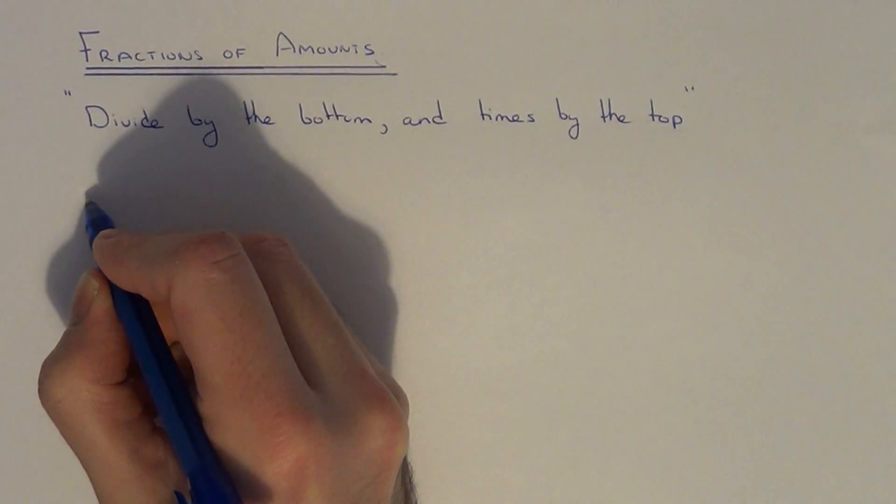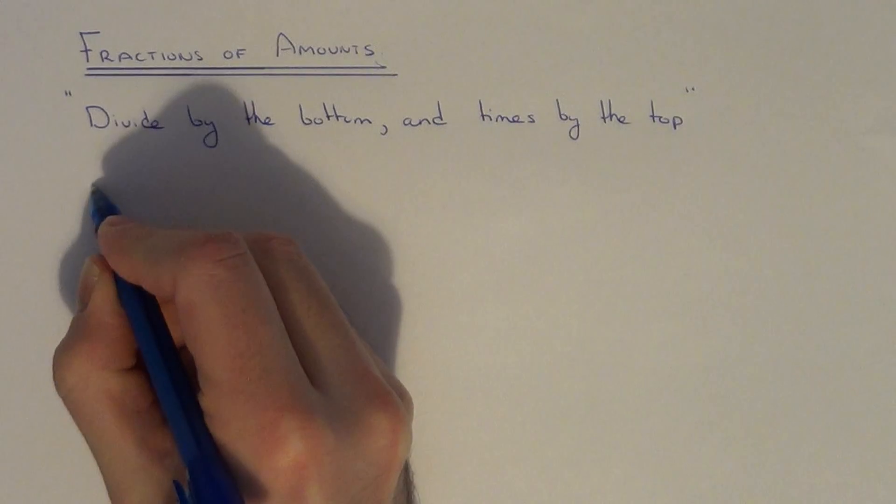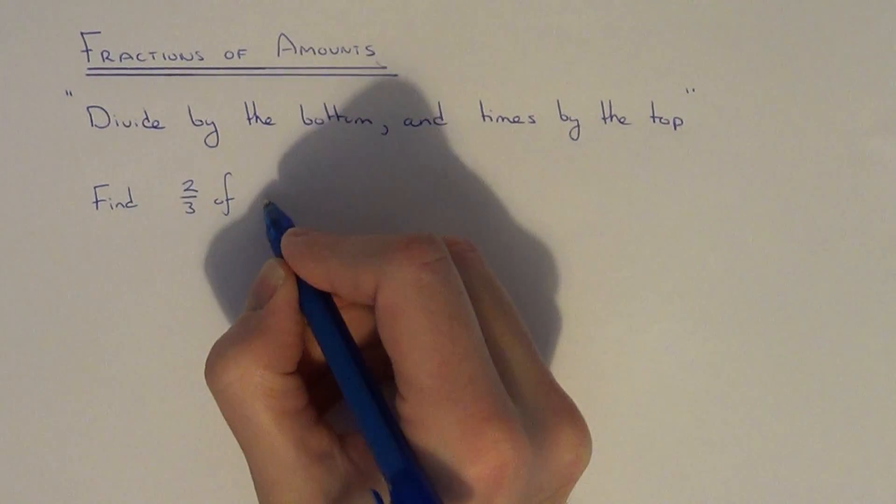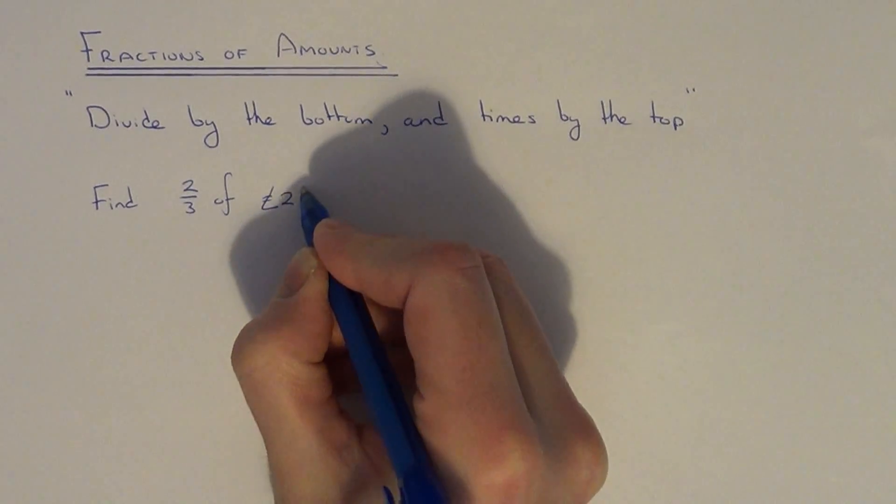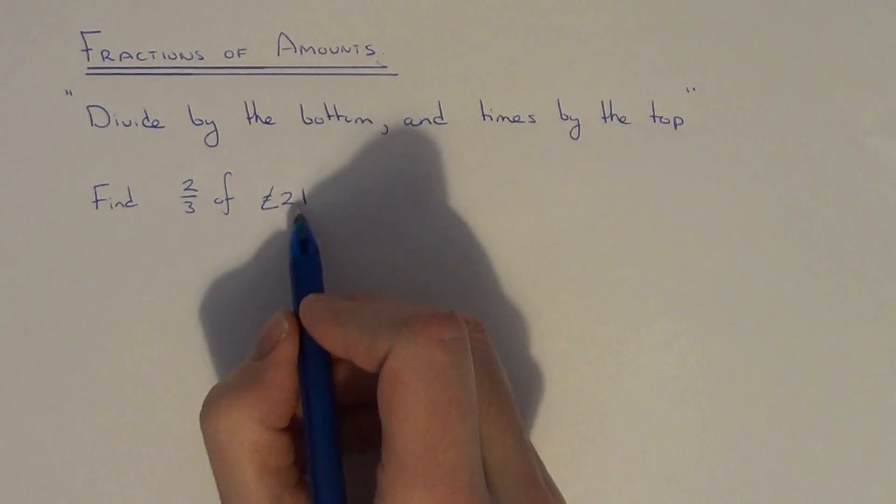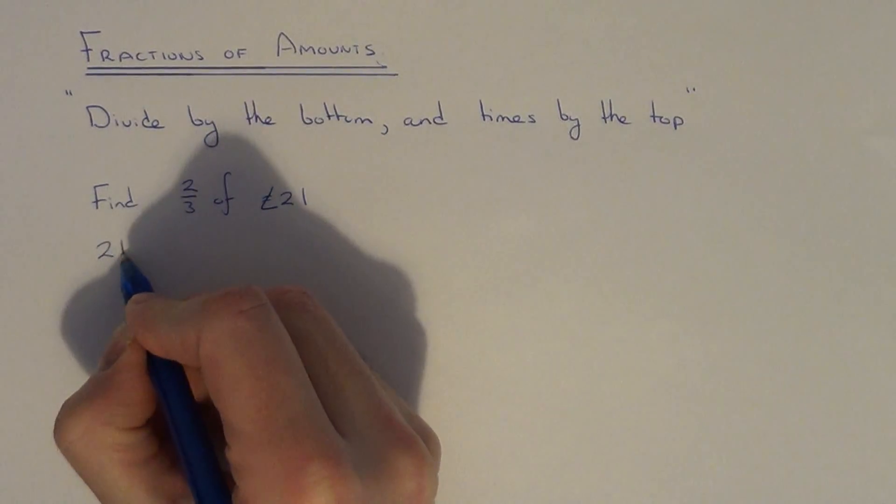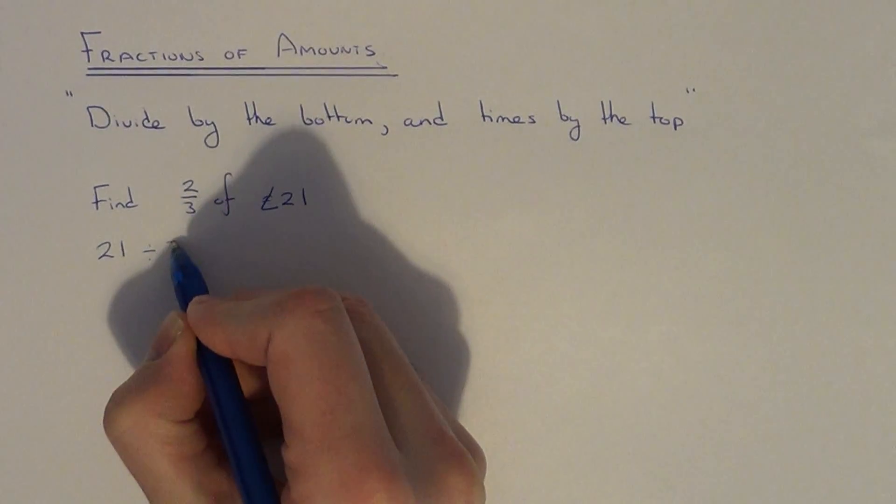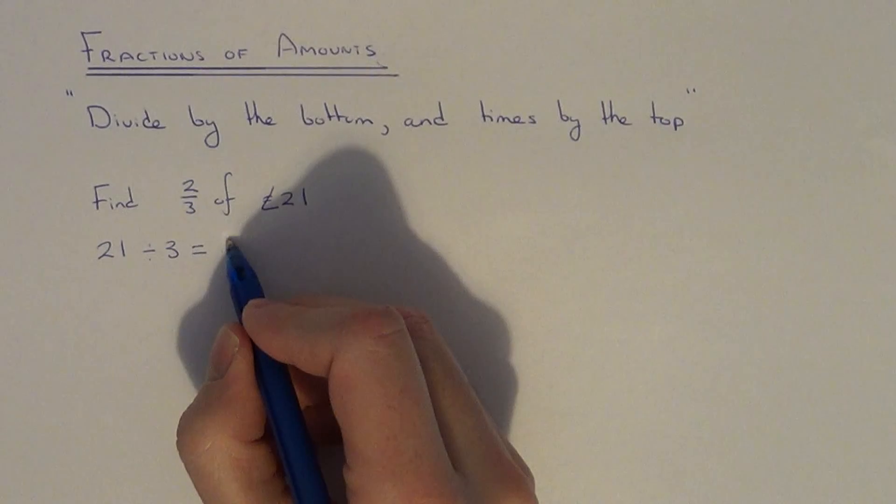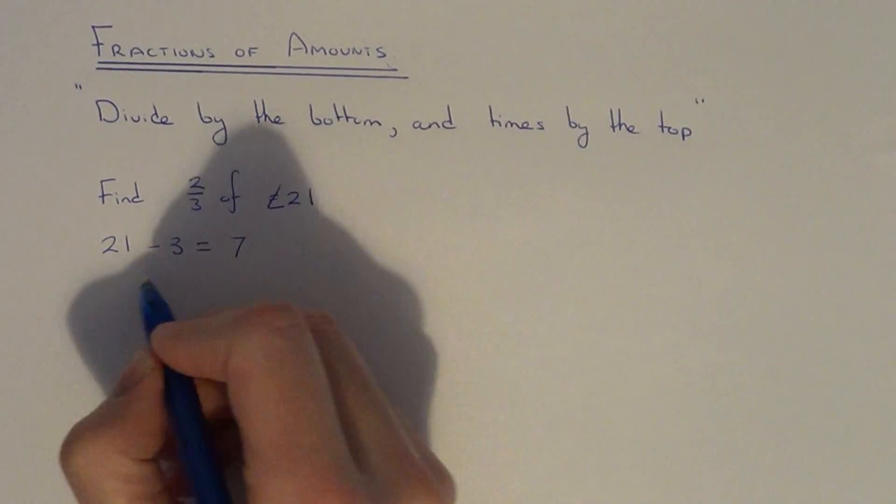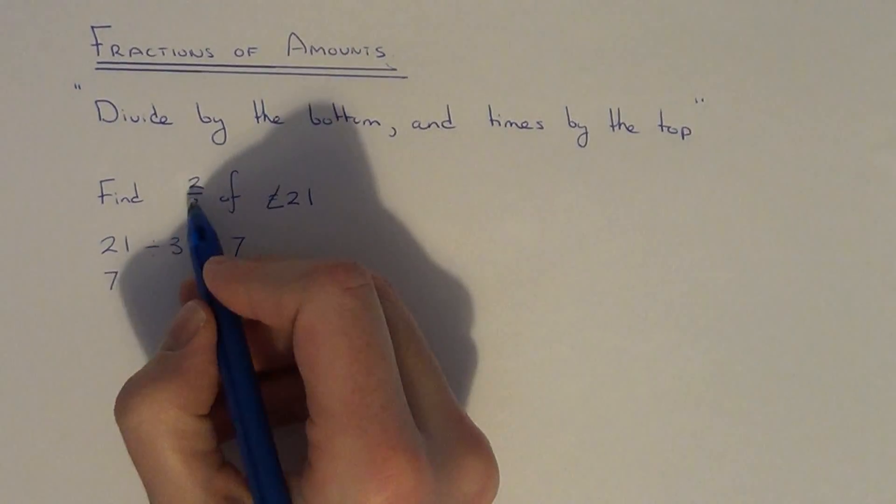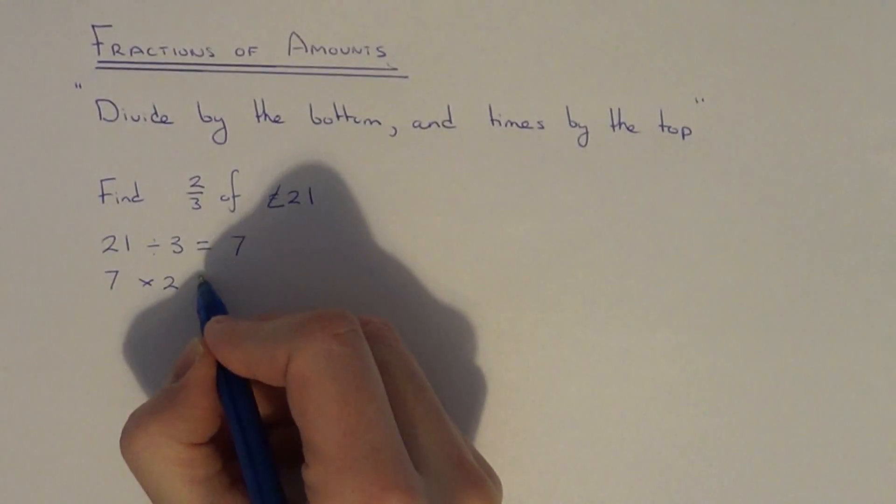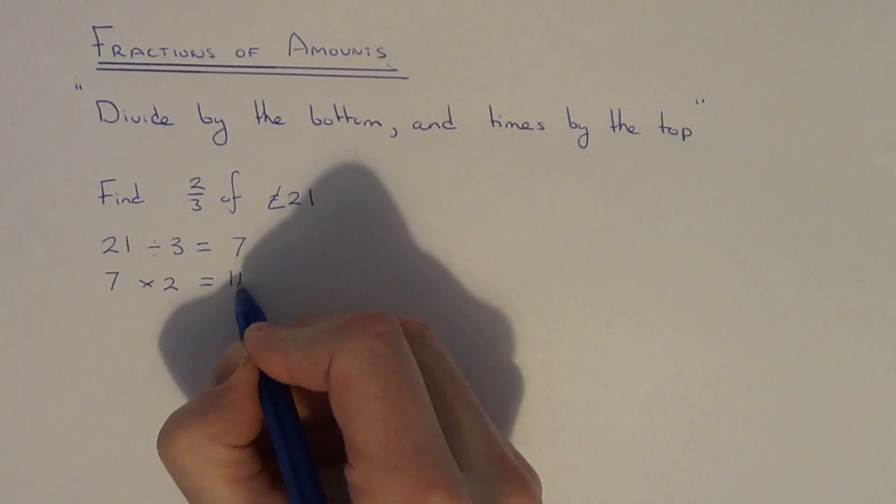Let's take a look at an example. Find two thirds of twenty one pounds. So put twenty one on your next line. All you need to do now is divide it by the bottom which is three. So twenty one divided by three is seven. Put this answer on the next line and times it by the numerator which is two. So seven times two is fourteen.